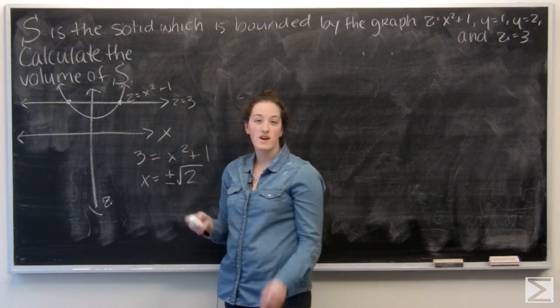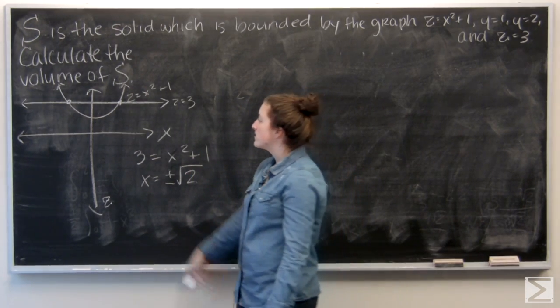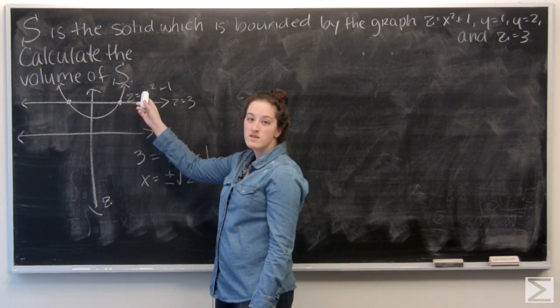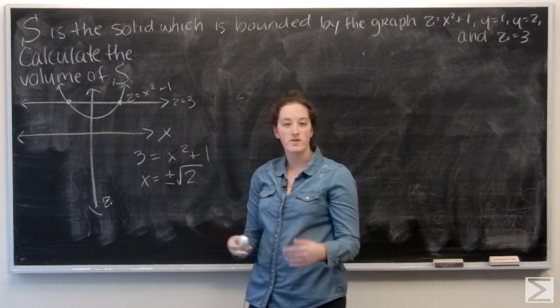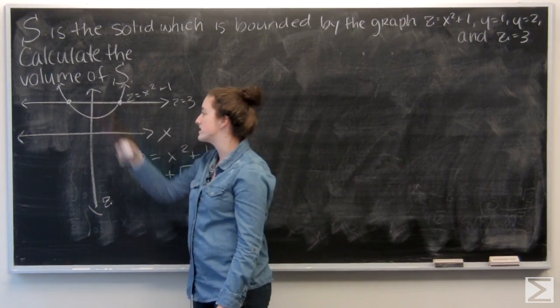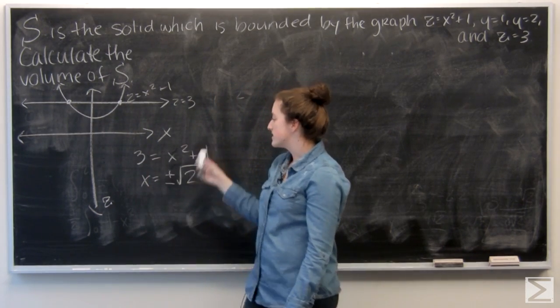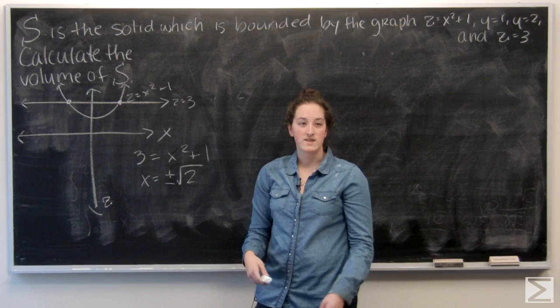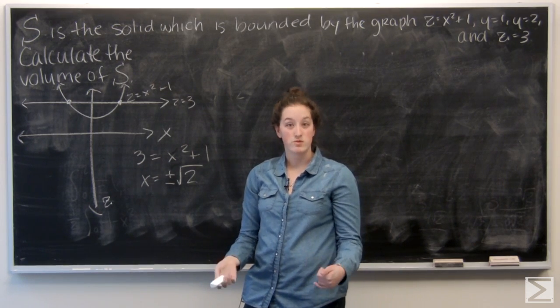I projected S into the xy plane, so I have z equals x squared plus 1 and z equals 3. Set those equal to each other, and I can get the x values of their points of intersection. So 3 equals x squared plus 1 got me x equals plus and minus root 2.